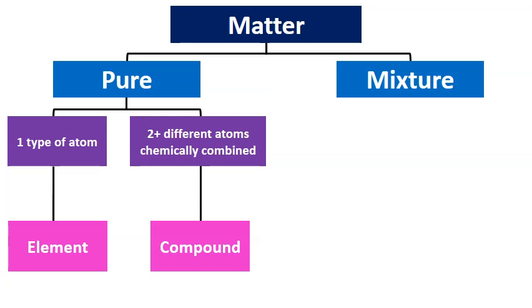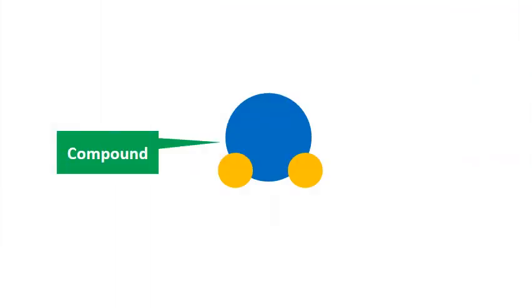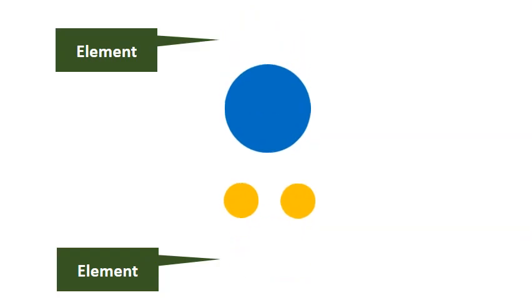The other cool thing about these pure substances is we can go from one to the other. For example, we can take compounds, break them down into elements, and we can take elements and build them into compounds. Here's an example using the compound of water: we can go from water to oxygen, hydrogen, and hydrogen and back. Elements, compounds, elements, compounds, and so on.